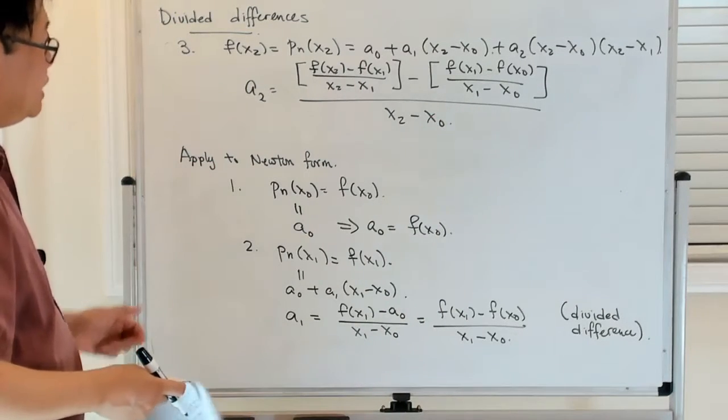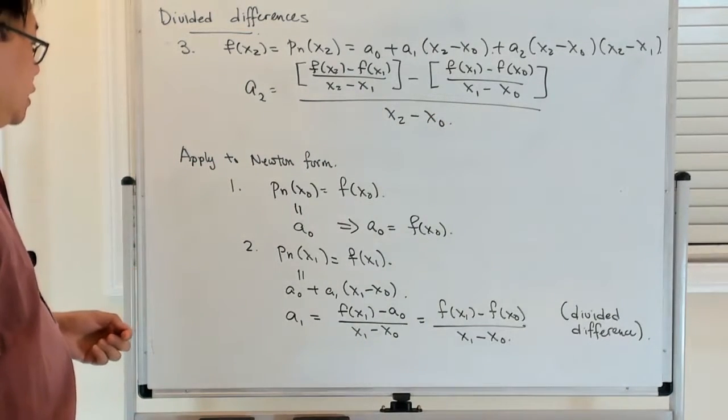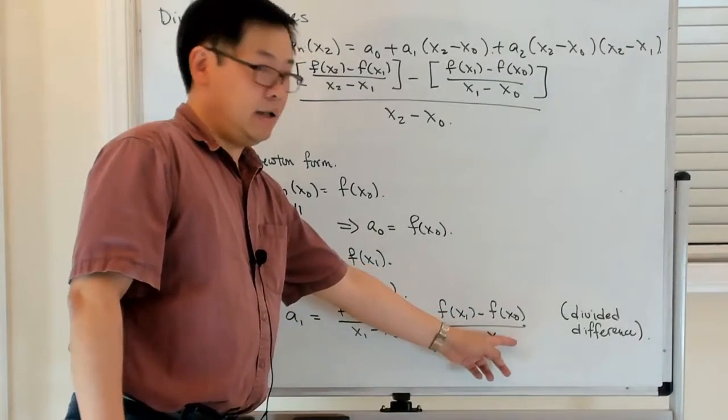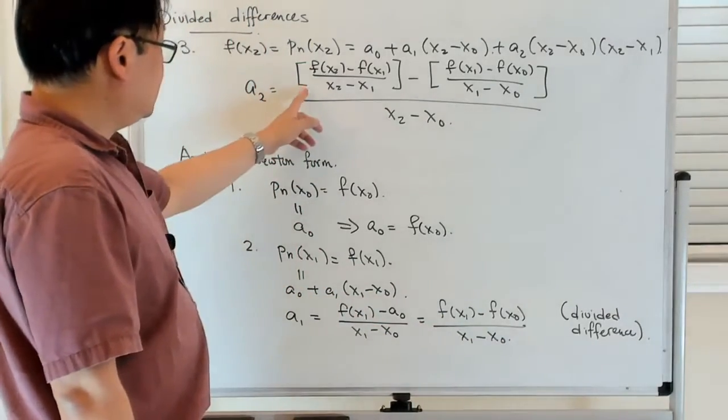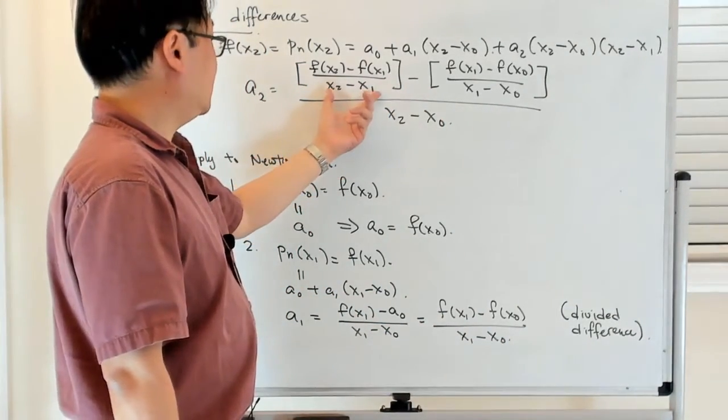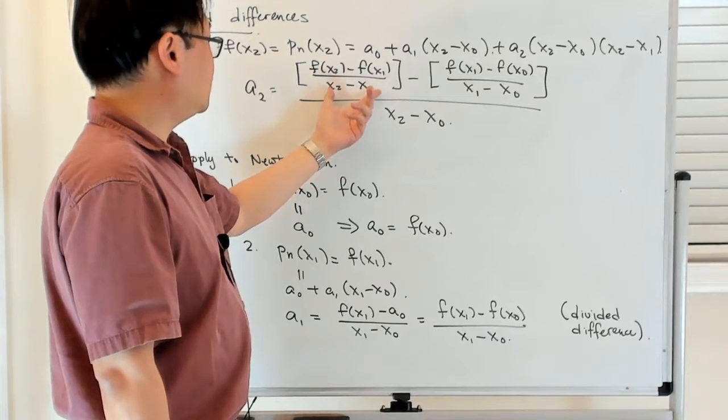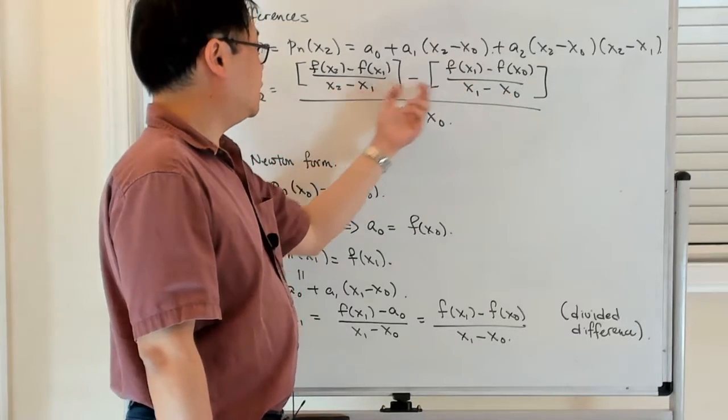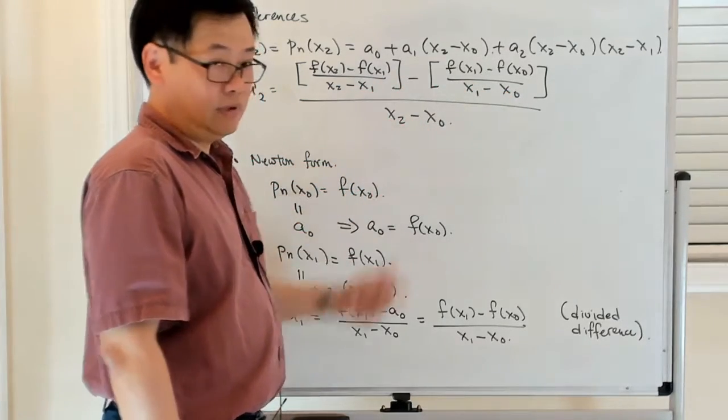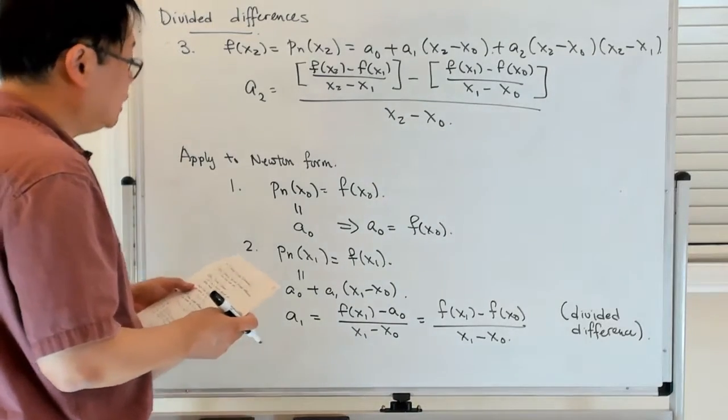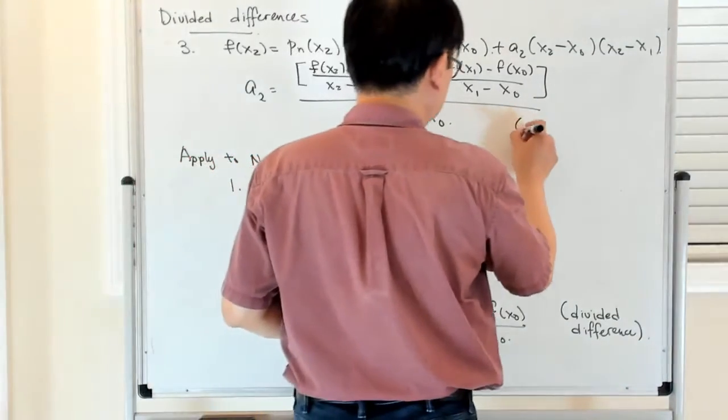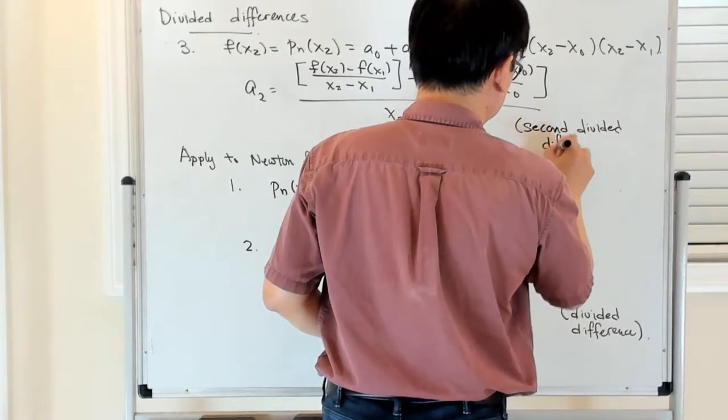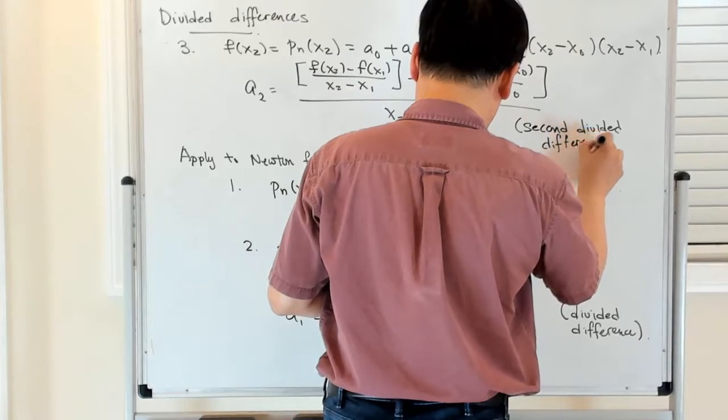So now hopefully you're starting to see something of a pattern. This here looks like a finite difference approximation of a first derivative. And this looks like a finite difference approximation of a second derivative. This is like a finite difference approximation involving x1 and x2. This is a finite difference approximation of the derivative involving x0 and x1. And so I take the difference and divide it by the difference in the values. That all looks very consistent. And so this is what is called a second divided difference.